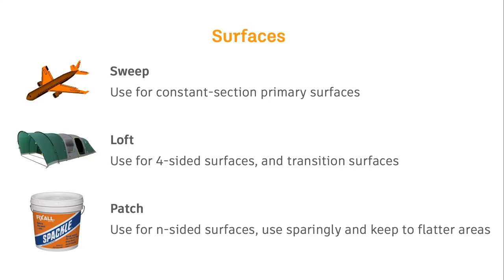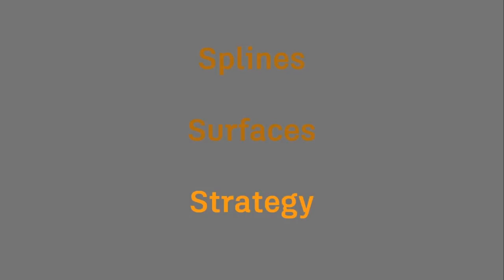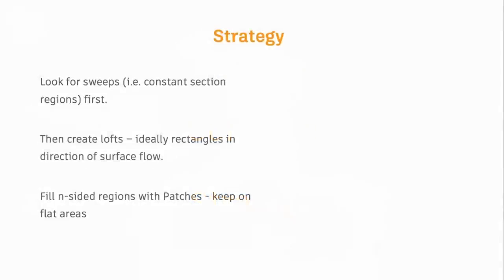So to summarize the three surface types — thinking of them in these terms helps understand what's going on underneath and when to use each. Sweep is a constant section shape, good for primary surfaces because you can't smoothly transition from them to other shapes. Loft is the powerhouse of surfacing — good for four-sided surfaces and you can build transitions into them. Patch: if you have situations that can't be resolved with a sweep or loft, use patch — but use it sparingly because you have less control over shape, and the flatter the area the more likely you'll get a nicer, cleaner result.